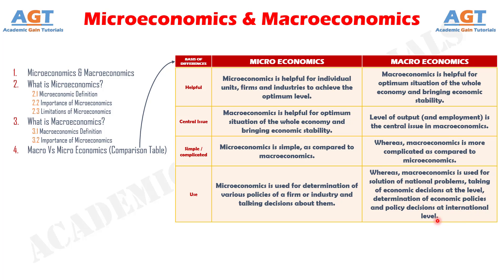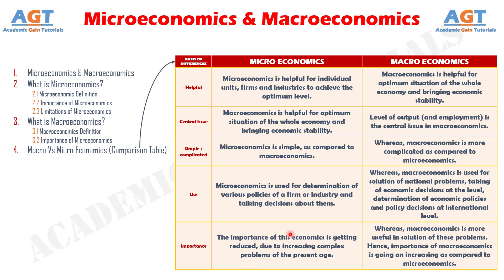Difference number ten: The importance of microeconomics is getting reduced due to increasing complex problems of the present age. Whereas macroeconomics is more useful in solution of these problems. Hence, the importance of macroeconomics is going on increasing as compared to microeconomics. So, we have learnt microeconomics and macroeconomics. We discussed what is microeconomics, along with its definition, importance and limitations. We knew more about what is macroeconomics, along with its definition and importance, and finally learnt the difference between microeconomics and macroeconomics using a comparison table.